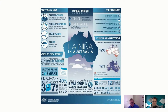When we have a La Niña we are literally flipping it the other way, so there's a much higher chance of widespread rainfall over most of the east, north, and south — but much less so in the west. The west tends to get lower rainfall during La Niña and more rainfall during El Niño, because it's more influenced by the Indian Ocean.